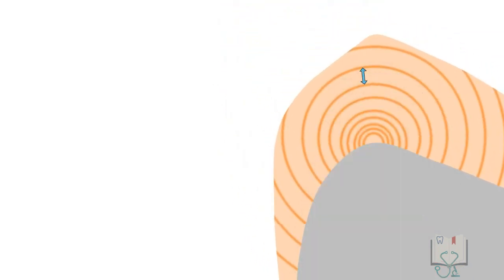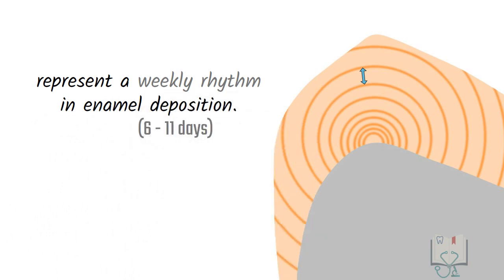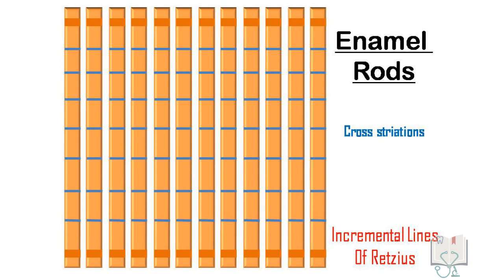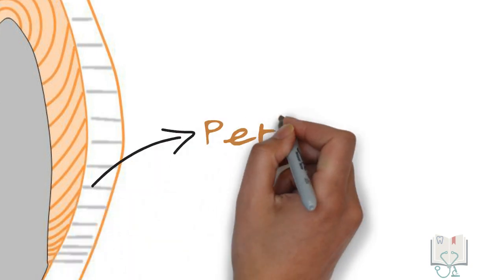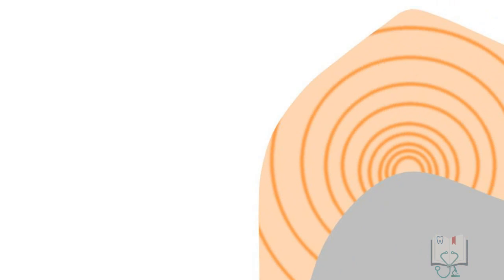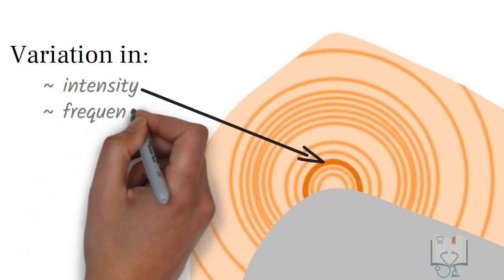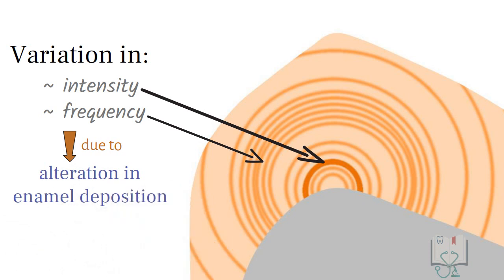The evenly spaced striae on average represent a weekly rhythm — that is, the striae of Retzius are about 25 to 30 microns apart, which means between two striae of Retzius there are 7 to 10 cross striations. When the incremental lines of Retzius reach the enamel surface, they produce elevations and depressions called perikymata. Presence of regular striae of Retzius is considered normal, though any variation in their intensity or frequency represents an alteration in enamel deposition, which may be due to metabolic disturbances.